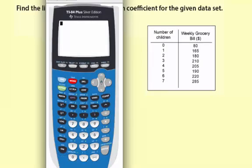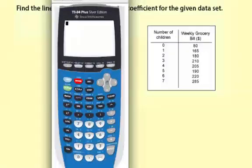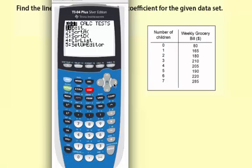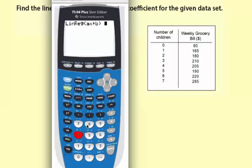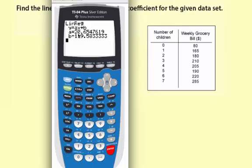We want to find the linear model and correlation coefficient. I'm going to go back to the main screen. I hit second and then quit. Stat, Calc. We want to do a linear regression or option four. And then hit enter. Here you can see you have y equals ax plus b. The a actually represents the slope or the rate of change. So you have 20.65 or 20.7 there.